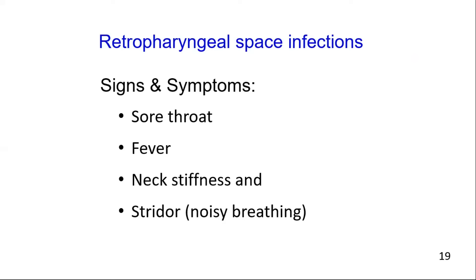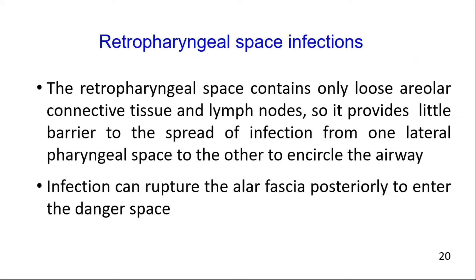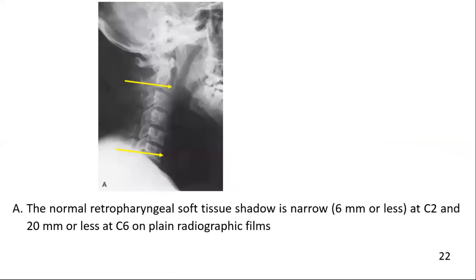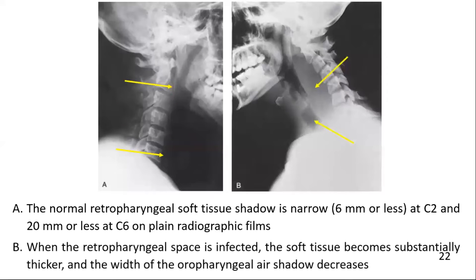The signs and symptoms of retropharyngeal space infections include sore throat, fever, neck stiffness, and stridor. The retropharyngeal space contains loose connective tissue and lymph nodes and may easily become involved by infection due to extension from the lateral pharyngeal space. It provides little barrier to the spread of infection from one lateral pharyngeal space to the other, potentially encircling the airway. The normal retropharyngeal soft tissue shadow is about 6 mm or less at C2 level and 20 mm or less at C6 on plain radiographic film. When infected, the soft tissue becomes substantially thicker and the width of the oropharyngeal airway shadow decreases.